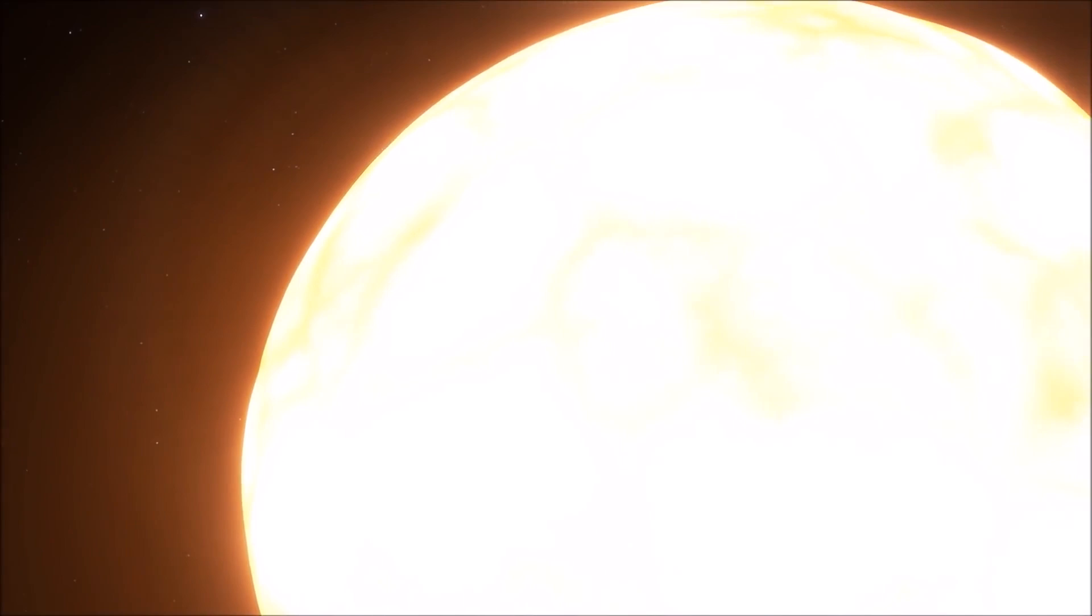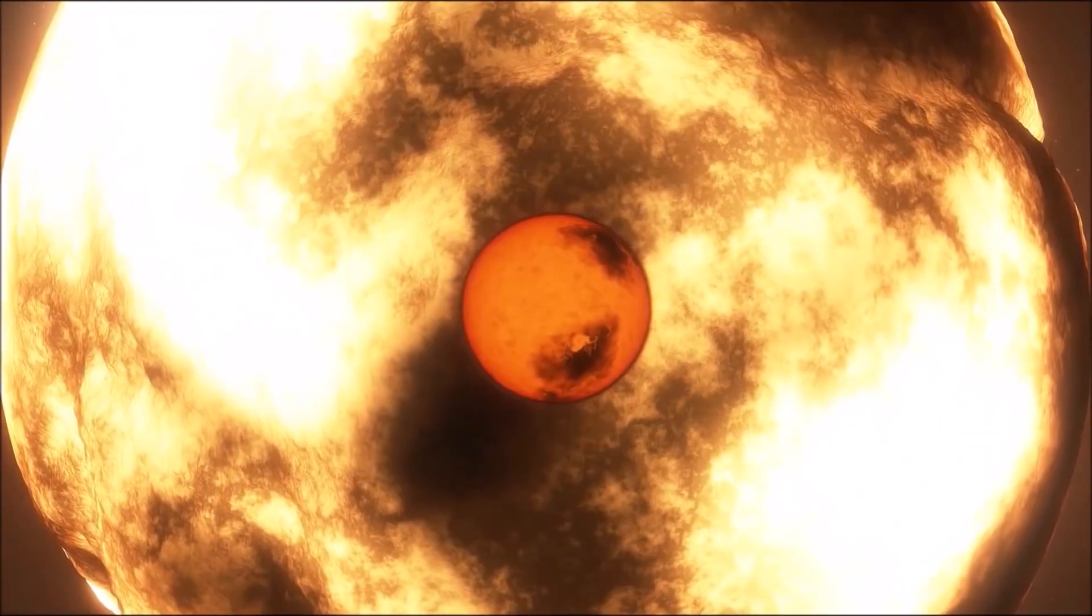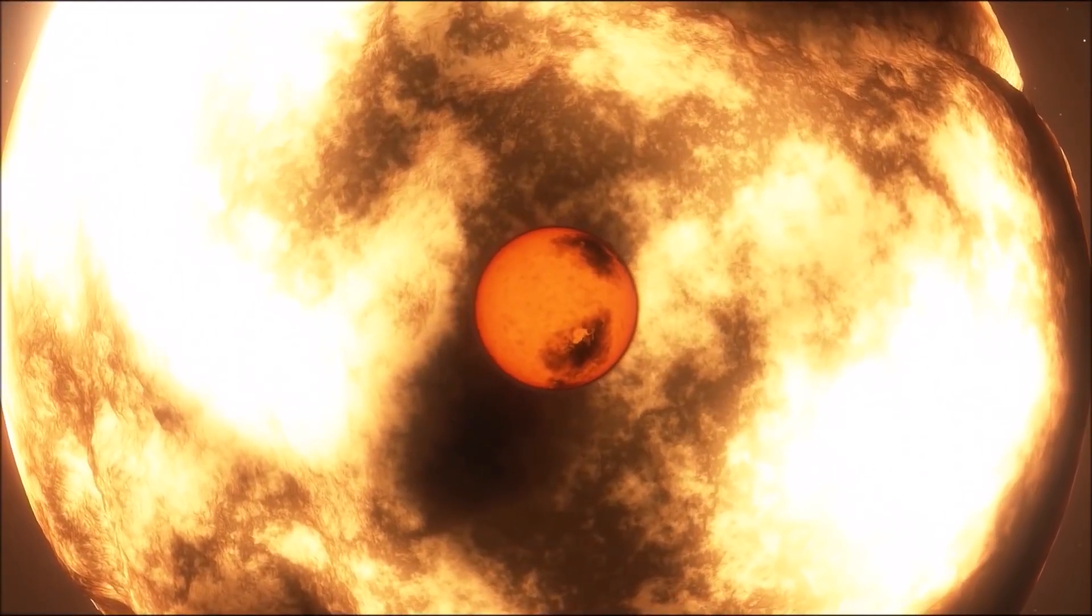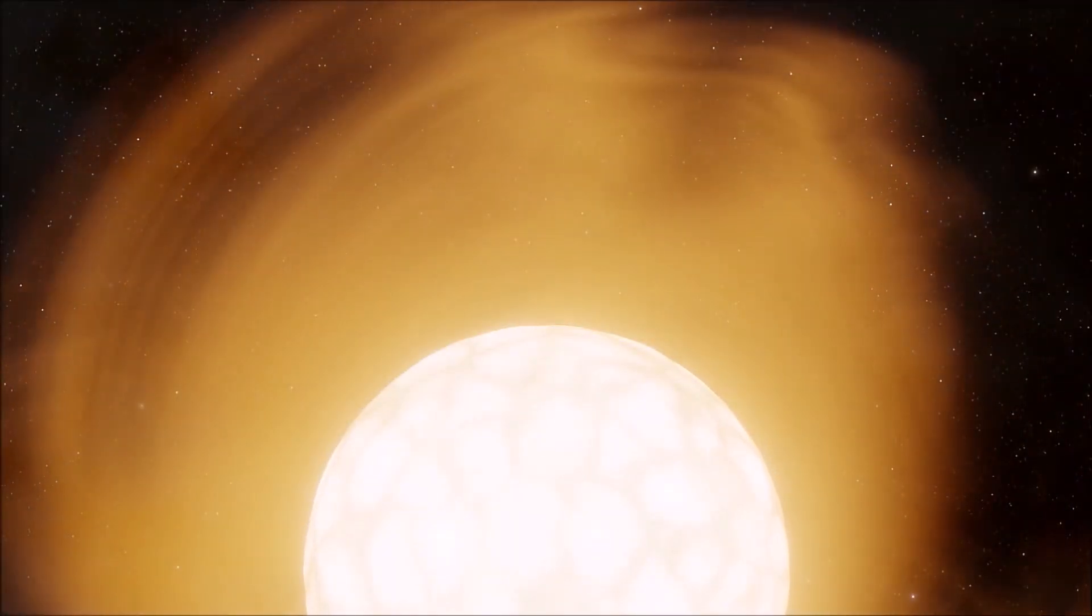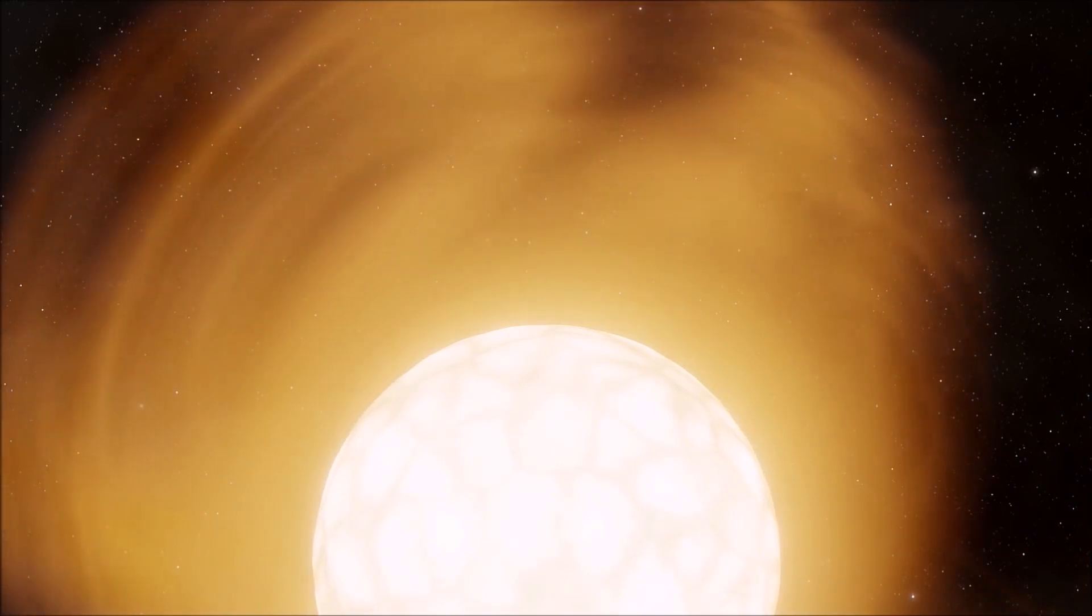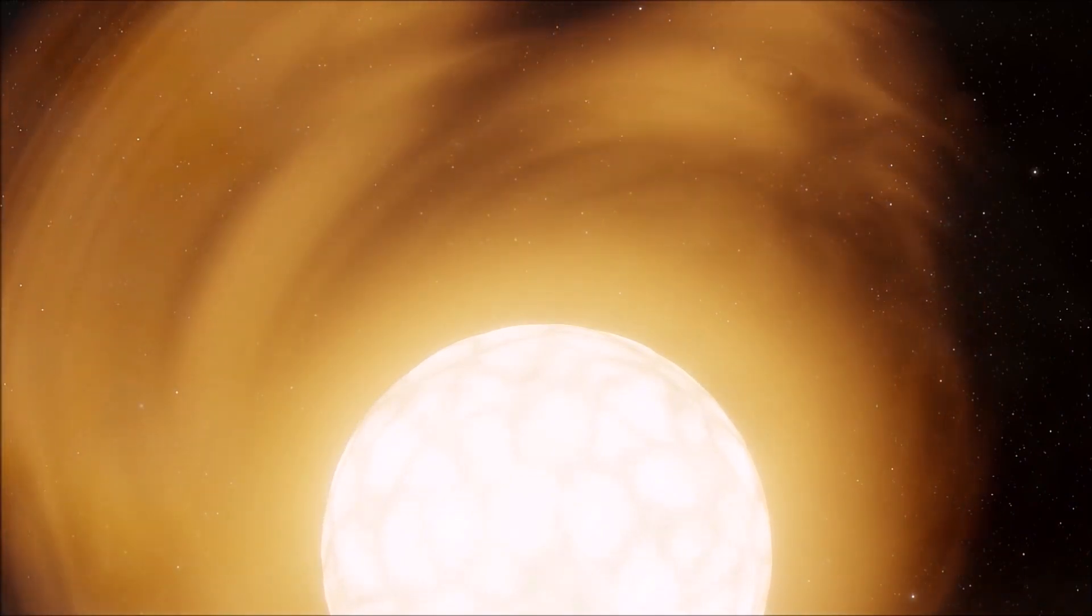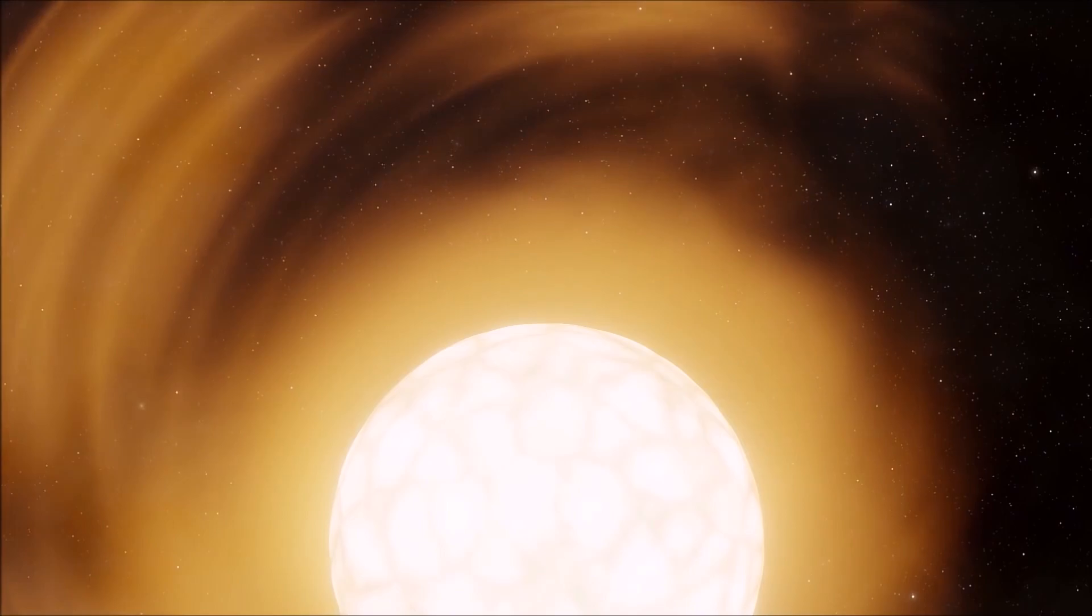As hydrogen fusion in the core slows down, the outer layers of the star expand, causing it to grow in size. In this phase, helium accumulates around the core, which is now mostly hydrogen, and the fusion process, known as helium envelope burning, begins.